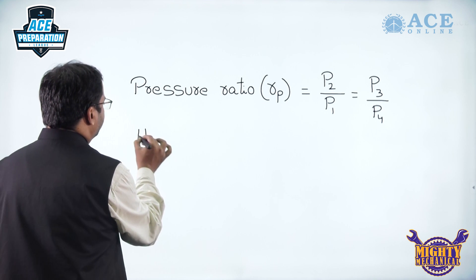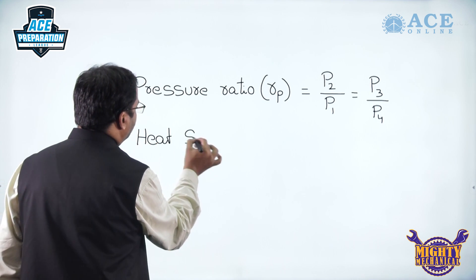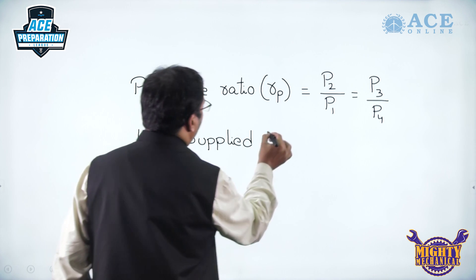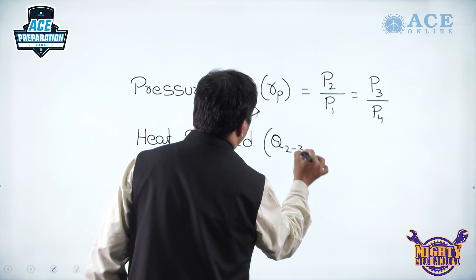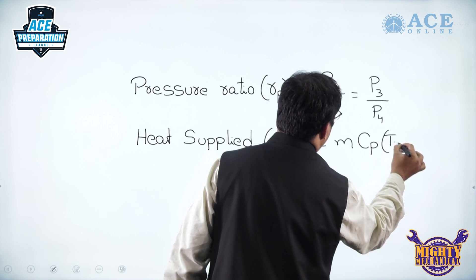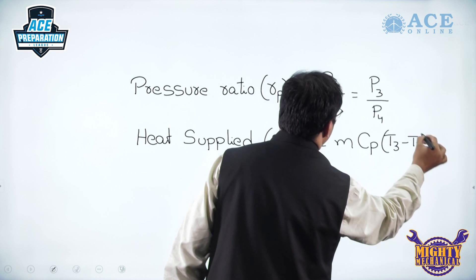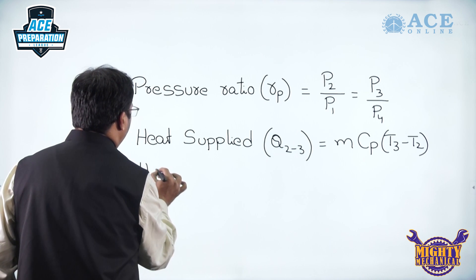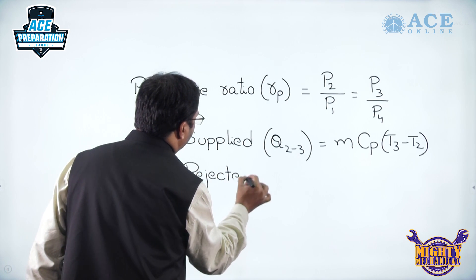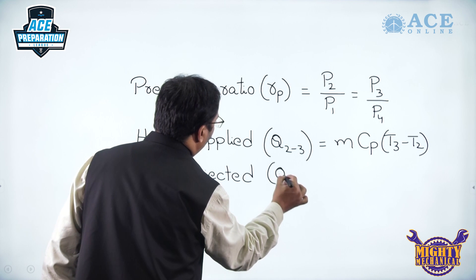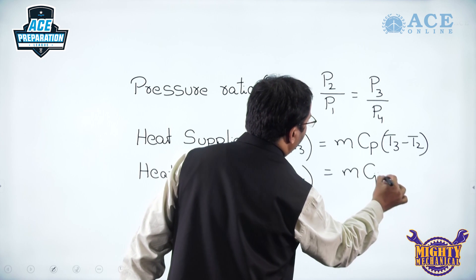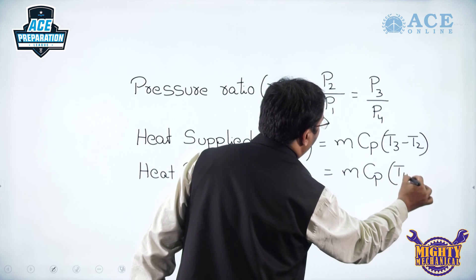Heat supplied is during process 2 to 3, which is a constant pressure process, so we get Q_s = mC_P(T3 - T2). Heat rejected is during process 4 to 1, which is also a constant pressure process, so we get Q_r = mC_P(T4 - T1).